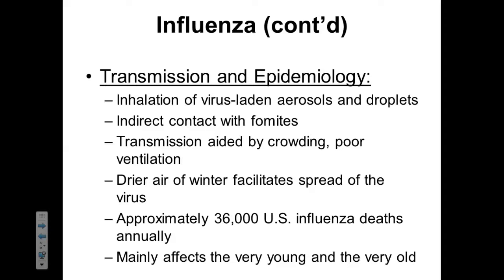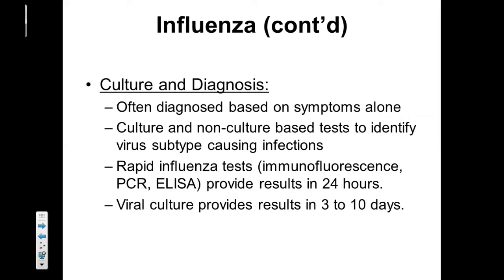Humid air is thicker and breaks down the virus more rapidly than dry air. In the United States, there are approximately 36,000 deaths from influenza annually. Typically, influenza deaths are going to affect the very young and the very old patient populations. When trying to figure out if somebody has influenza, we can't do a genetic test every single time because it's not practical — the sheer number of cases would overwhelm our ability to test. So we often just use symptoms alone to diagnose influenza.